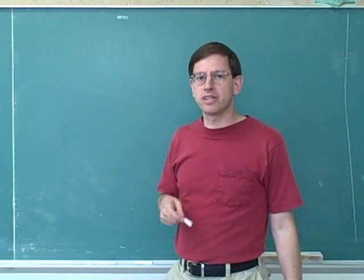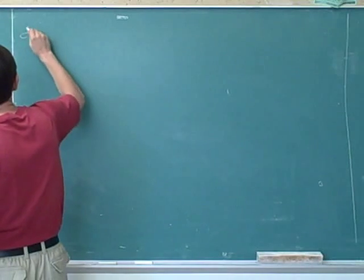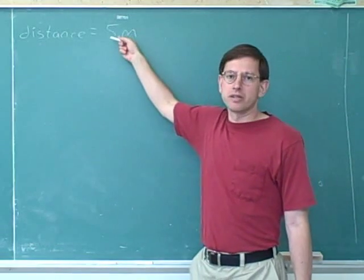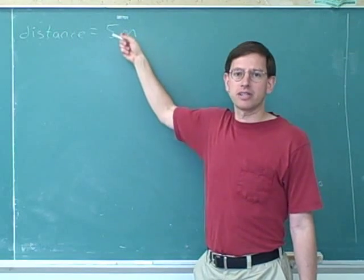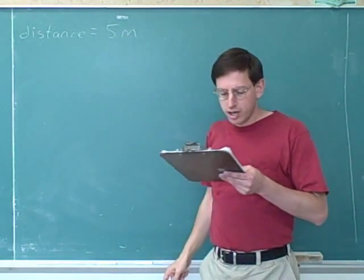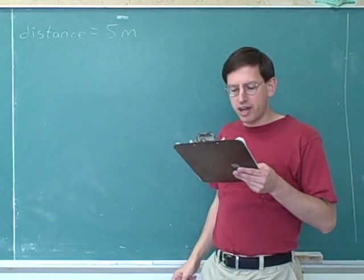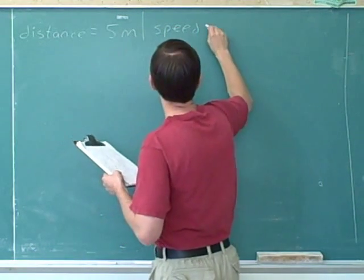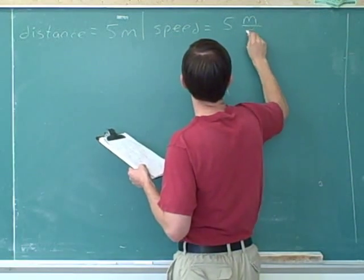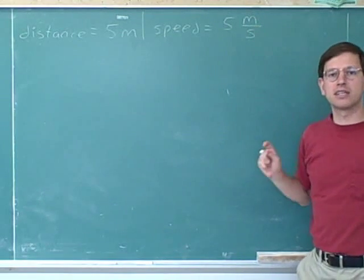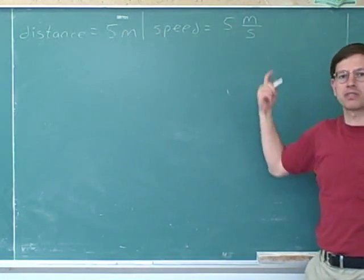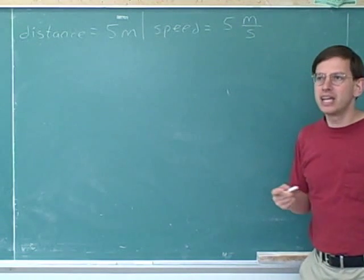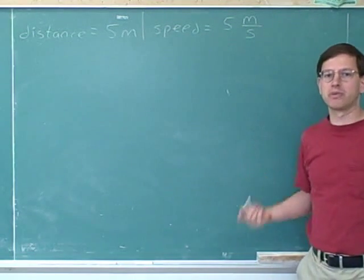Suppose that an object travels a distance of five meters. The units here are meters. This is not a ratio unit because meters are not a ratio. On the other hand, suppose that the object is traveling at five meters per second — a speed of five meters per second. Meters per second is what I mean by a ratio unit. A ratio is just a fancy word for a fraction, so a ratio unit is a unit that forms a fraction with a numerator and a denominator.